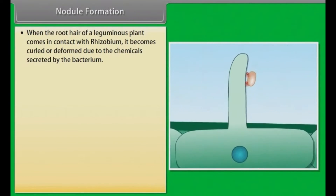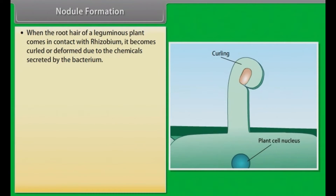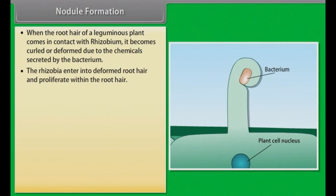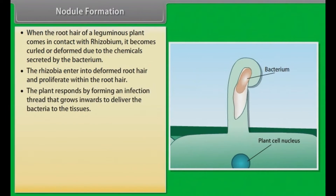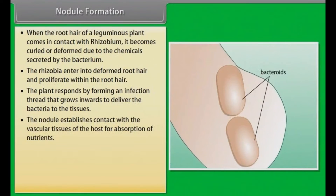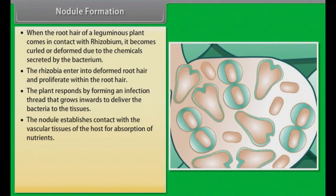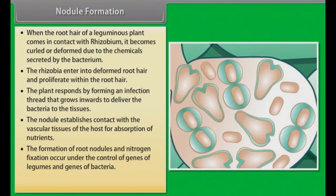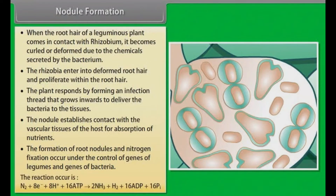Symbiotic biological nitrogen fixation — the classical example is the legume-bacteria relationship. Leguminous plants have root nodules where symbiotic Rhizobium bacteria fix atmospheric nitrogen into ammonia, which is then used for amino acids, proteins, vitamins, and nucleic acids. When the root hair of a leguminous plant contacts Rhizobium, it becomes deformed due to chemicals secreted by the bacteria. The bacteria enter and proliferate within the root hair; an infection thread forms, delivering bacteria to the tissues. The nodule connects to vascular tissues. The reaction is: N₂ + 8e⁻ + 8H⁺ + 16ATP → 2NH₃ + H₂ + 16ADP + 16Pᵢ.